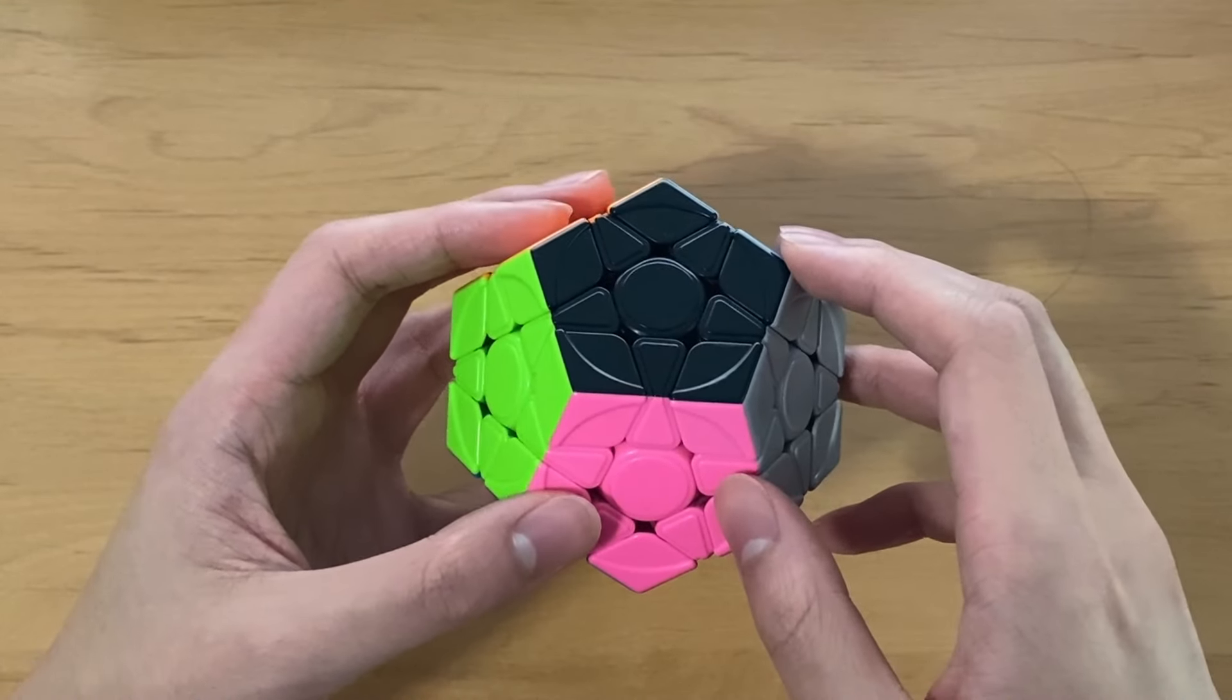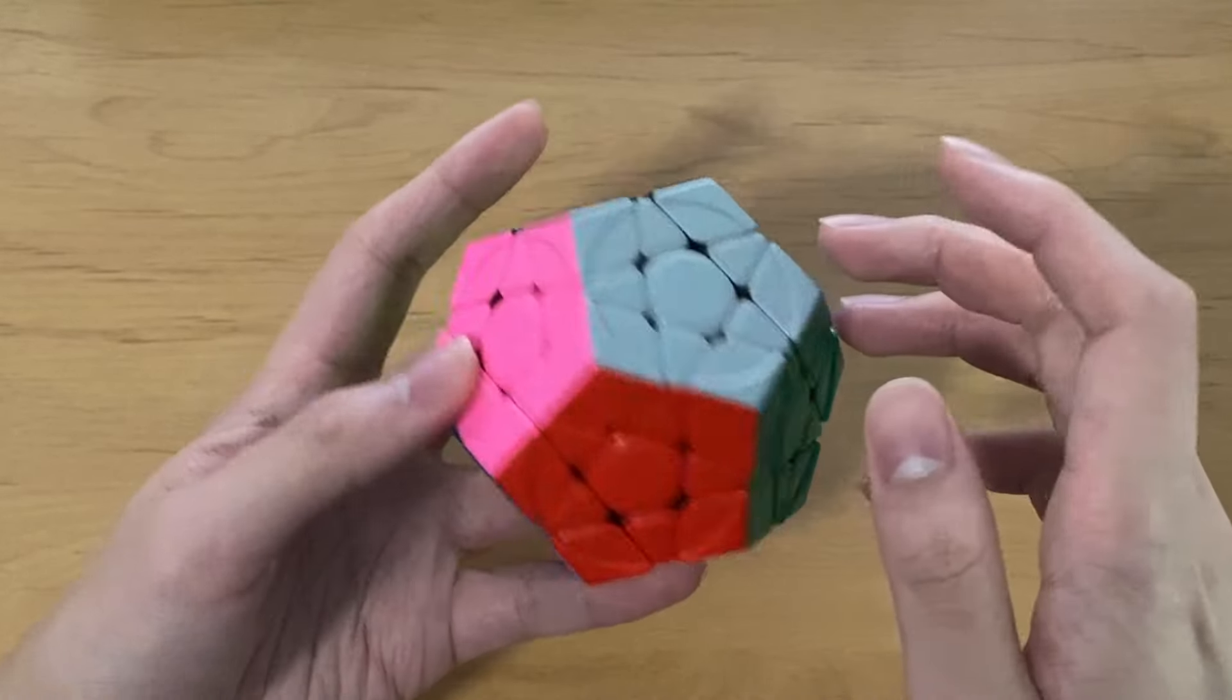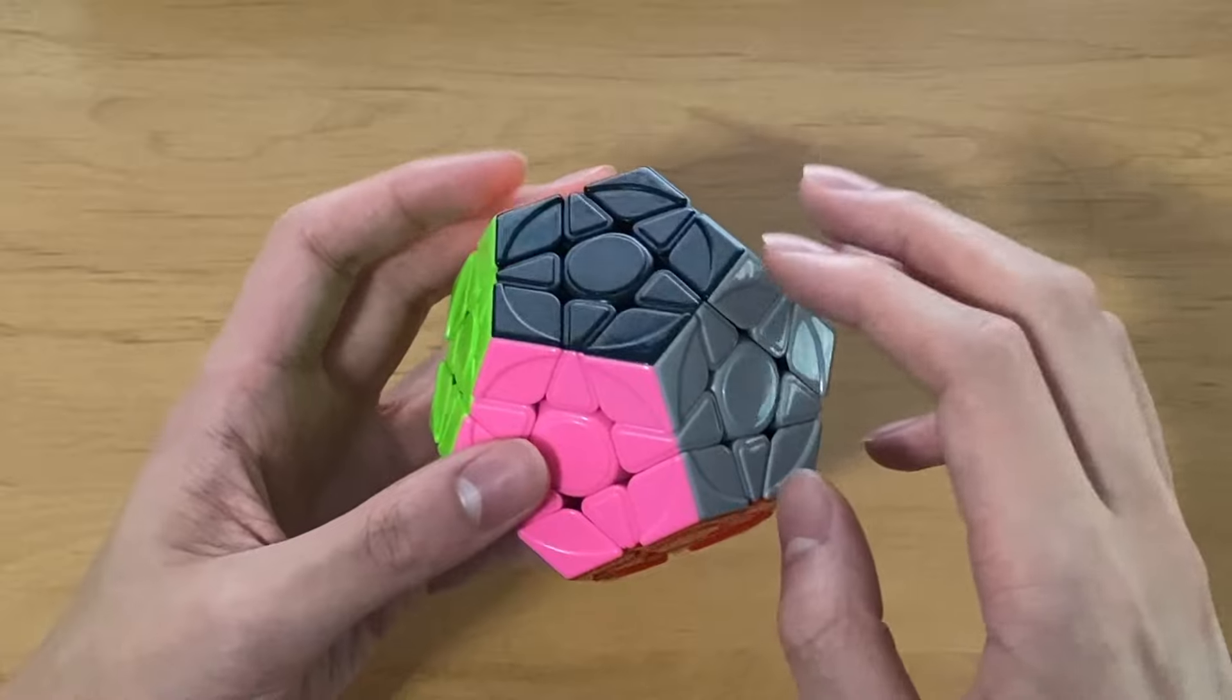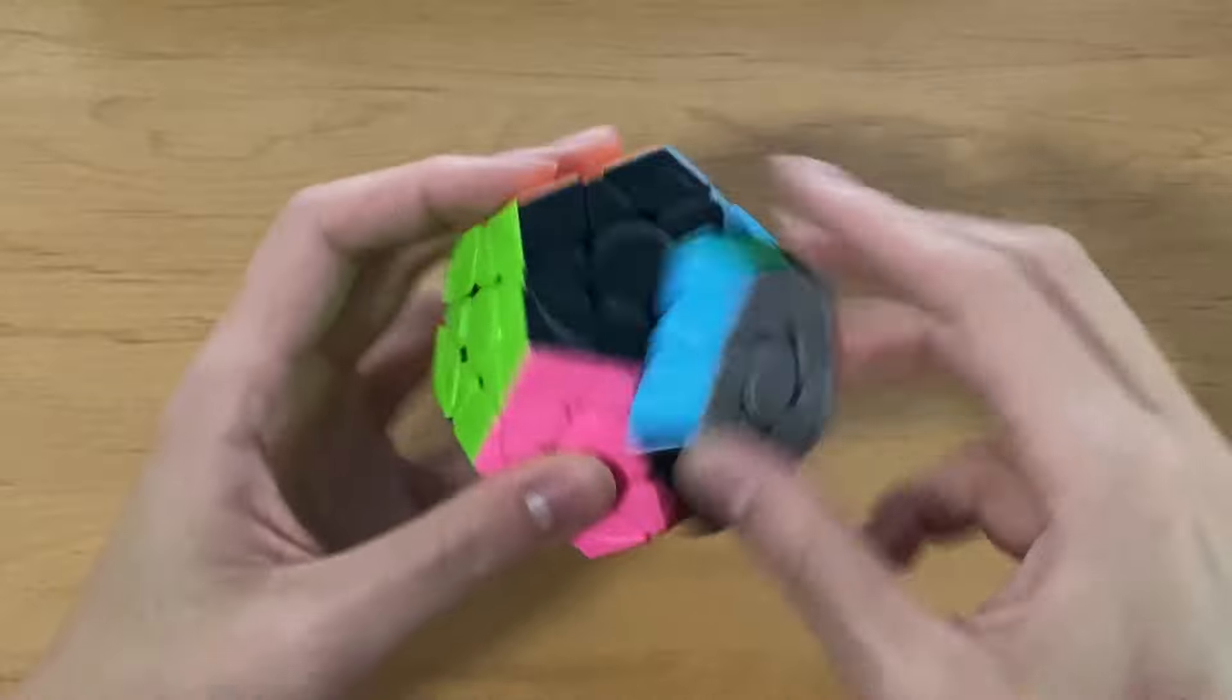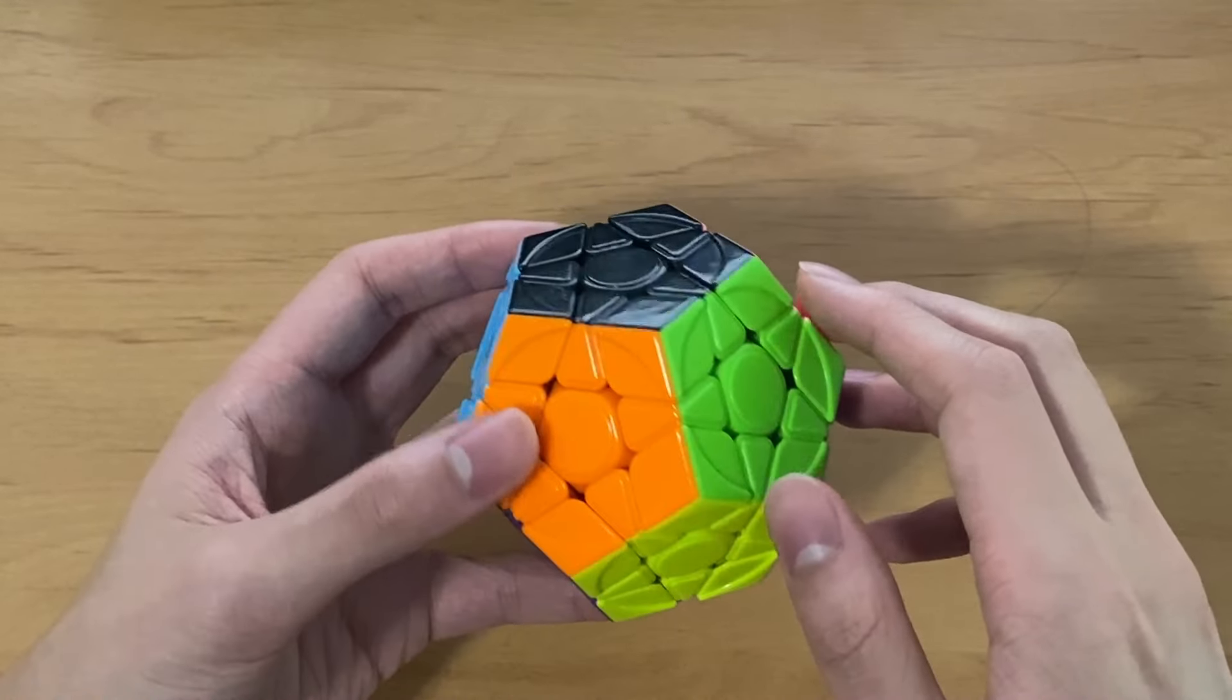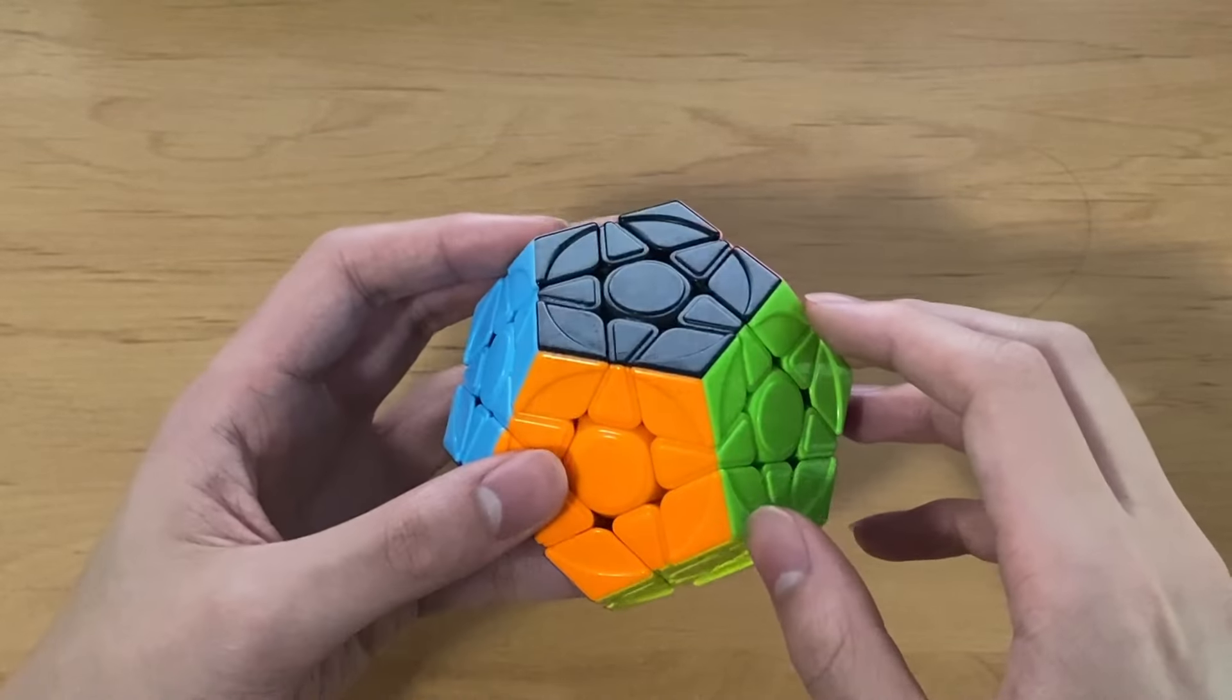I am getting a Gan V2 Megaminx pretty soon, so I'm excited to try that out and see how it is. It might replace this as being my main, but for now this is currently my main. Even though this cube is only $13, the performance is the same as a flagship cube. You can get some extremely good turning on this, and I find that it turns more consistently than other Megaminxes like the Dayan, and it's better to use in competition, at least for me.